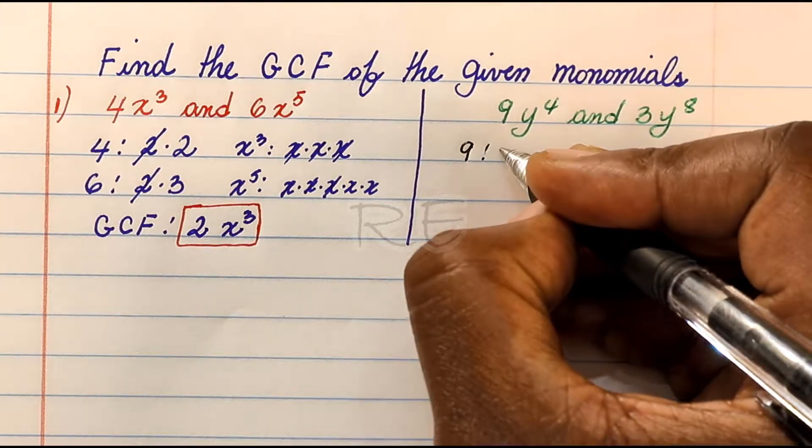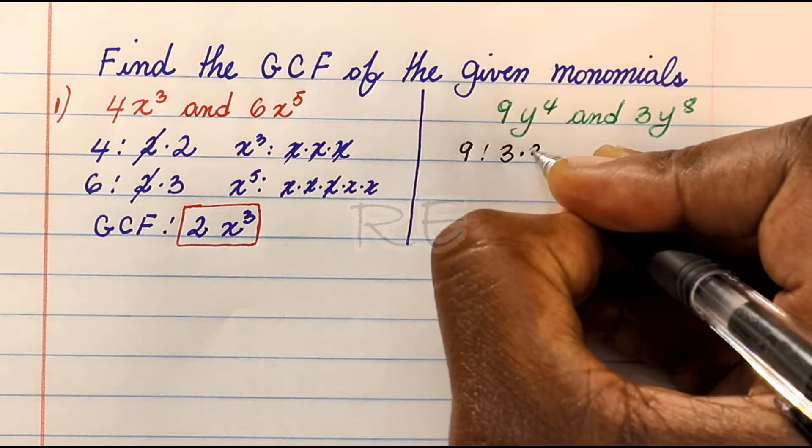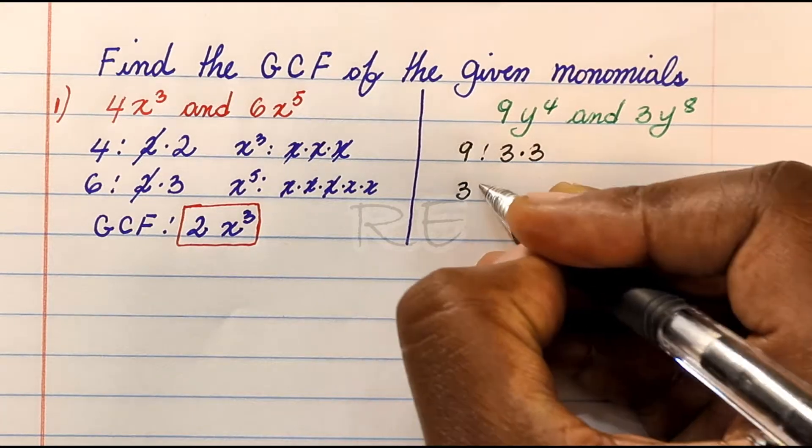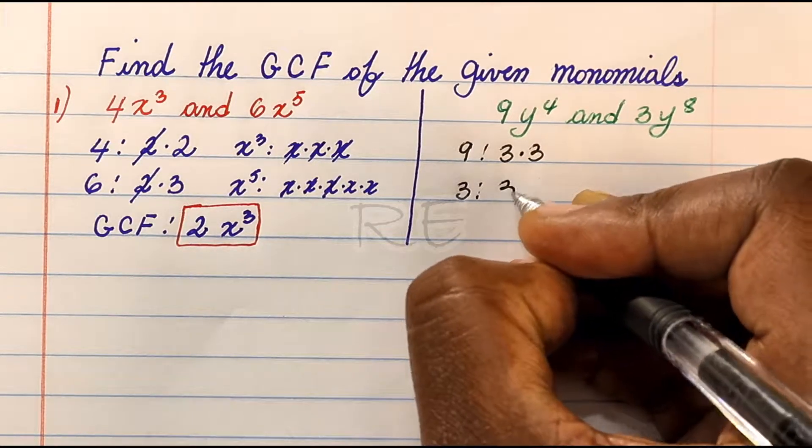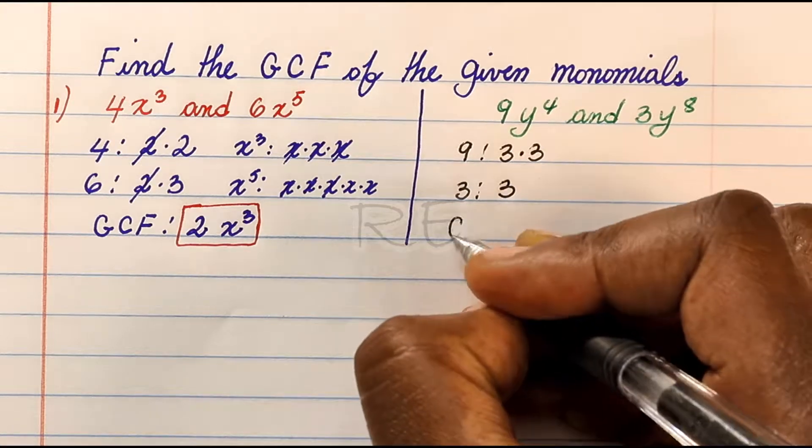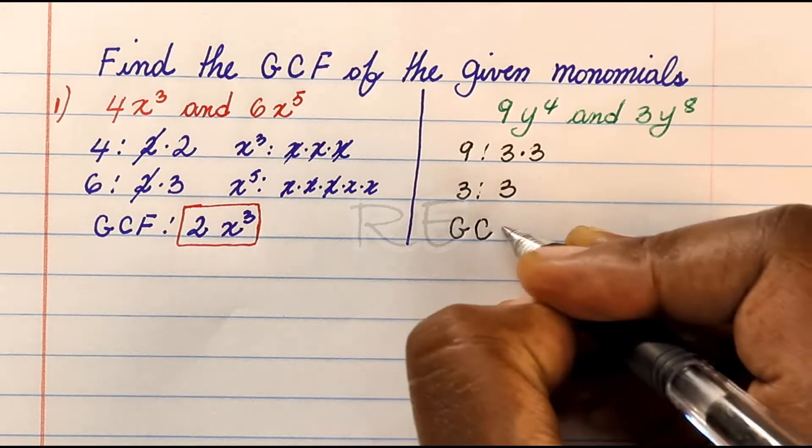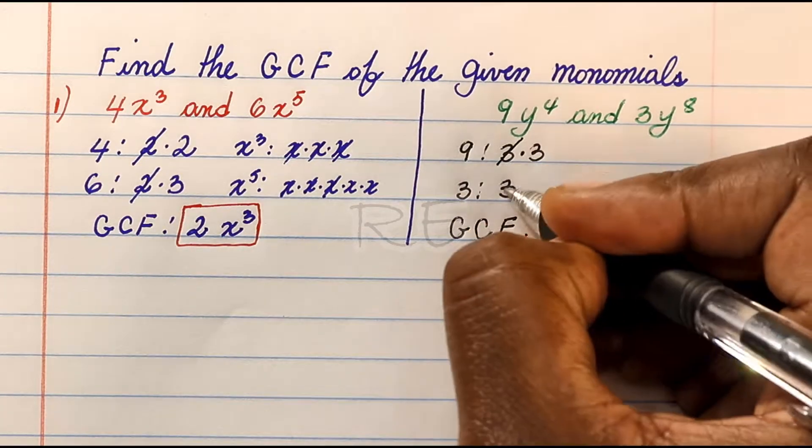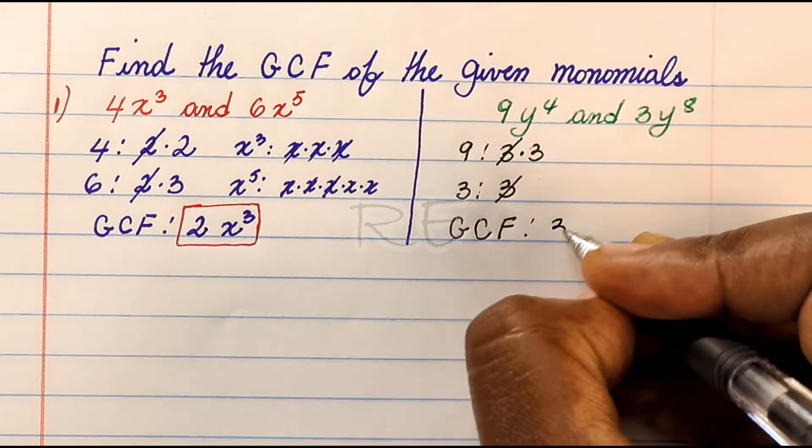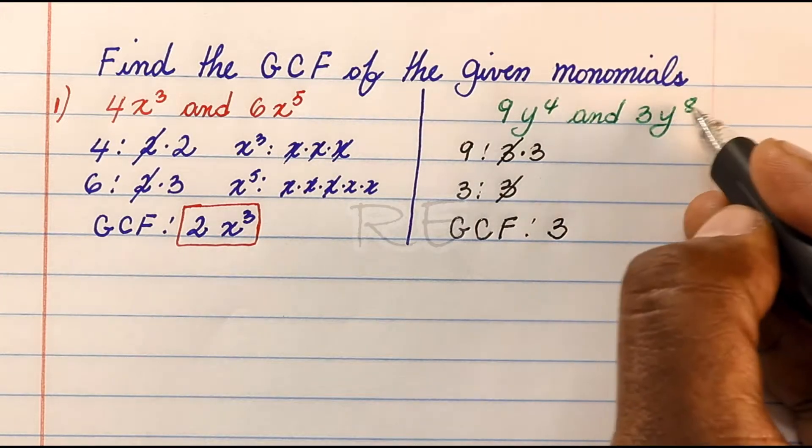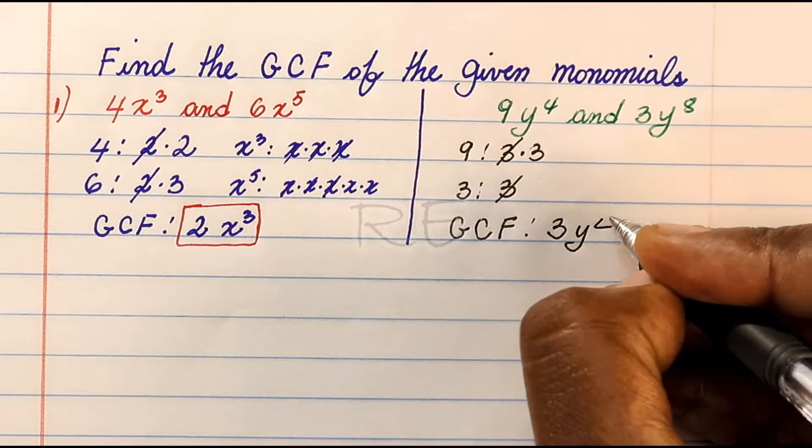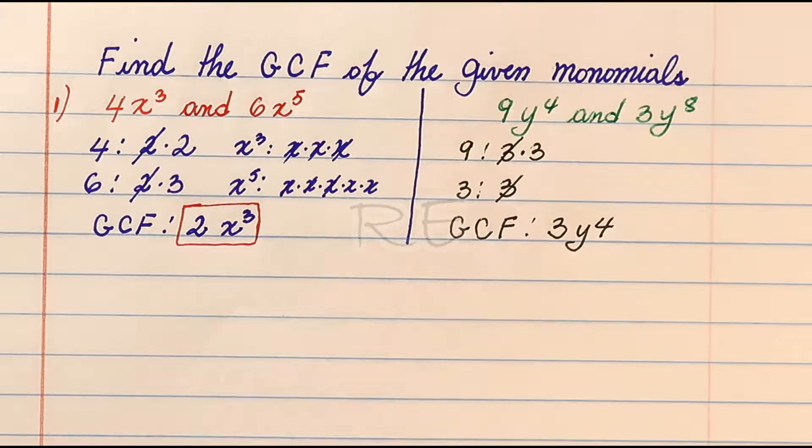9 is 3 times 3. 3 is just 3. The numerical GCF, the largest number that 9 and 3 share, is 3. Now automatically the lesser exponent is the GCF, so it's y to the fourth.